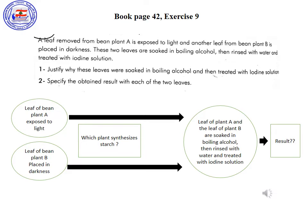A dark blue color is obtained in the leaf exposed to light, because the plant uses light to produce organic matter. However, a yellow color is obtained in the leaf placed in darkness, because the plant cannot synthesize organic matter without light. Note: photosynthesis occurs only during the day. This is why starch appeared in plant A and not in plant B.